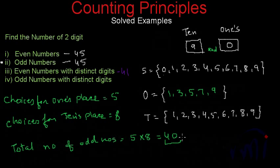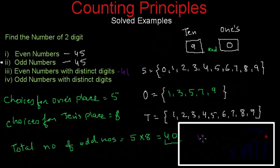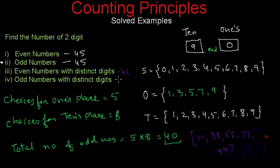Which odd numbers are we not counting? We are not counting 11, 33, 55, 77, and 99 — these are the five odd numbers with repeated digits. So the total number of two-digit odd numbers with distinct digits is 40. This was a solved example. Here we have learnt how to look at the possible choices, make decisions, and do the counting. We are going to take a few more problems to get the feel of the subject.